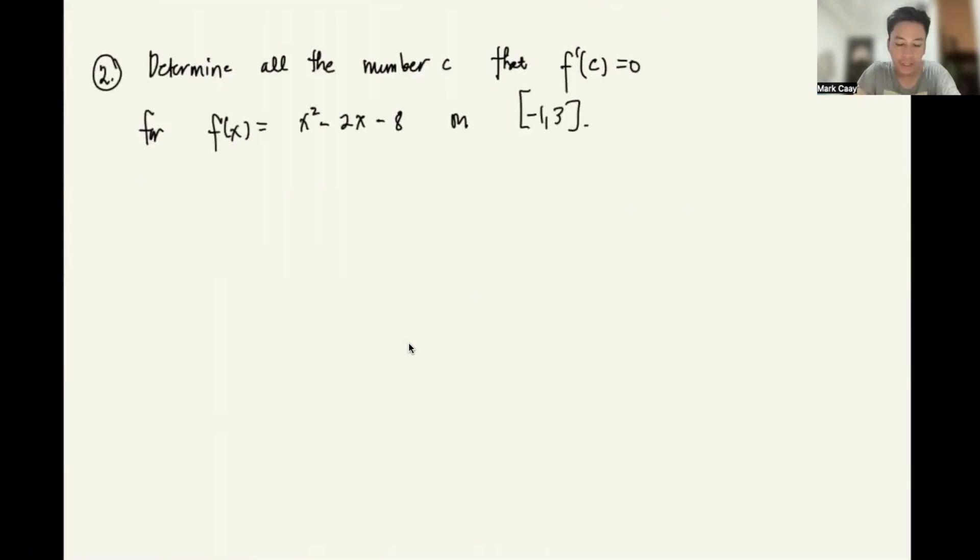Let's have another example. Determine all the numbers c such that f'(c) equals 0 for f(x) equals x squared minus 2x minus 8 on the closed interval [-1, 3]. So we're asked to do Rolle's theorem, the special case of mean value because it's 0. How do we do that? Let's double check first if we can apply Rolle's theorem. The condition is f should be continuous on the closed interval [a,b]. So our [a,b] is [-1, 3]. And then it is differentiable. But this is just a polynomial. So polynomials are continuous and differentiable. So therefore, it is satisfied based on the criteria.